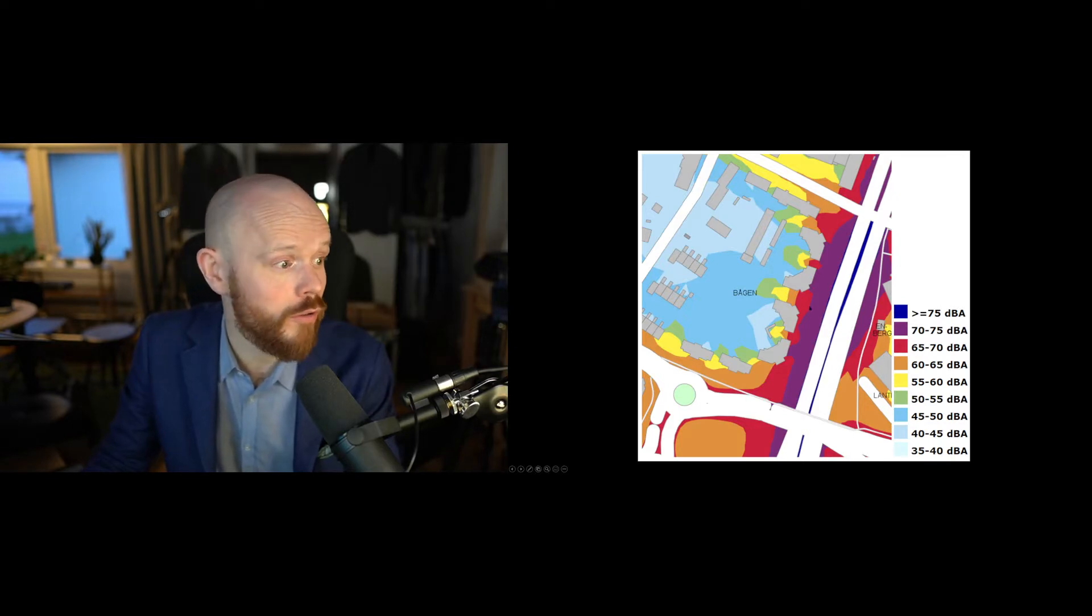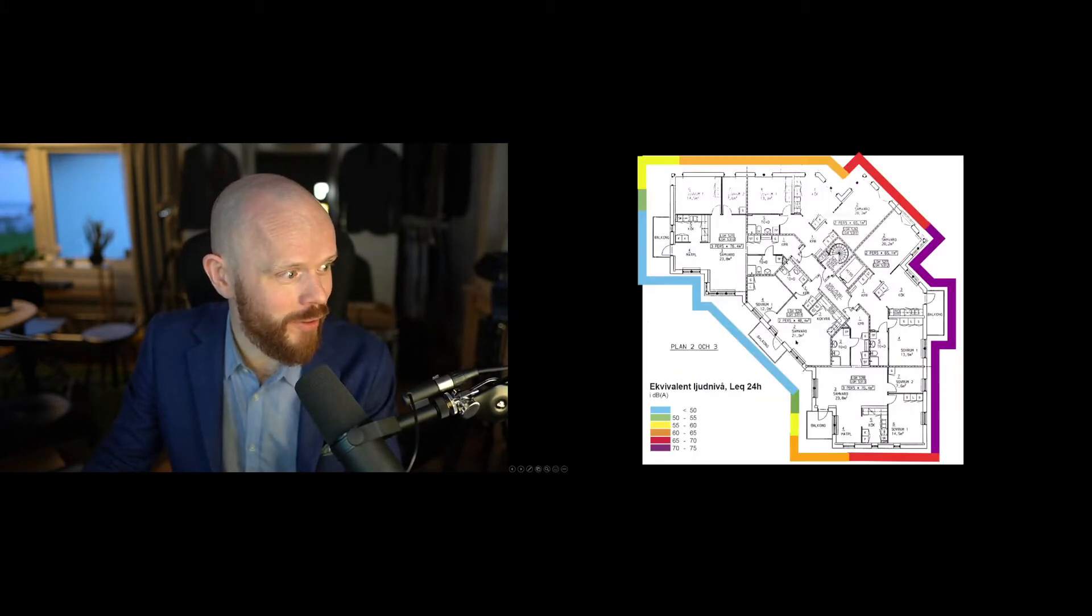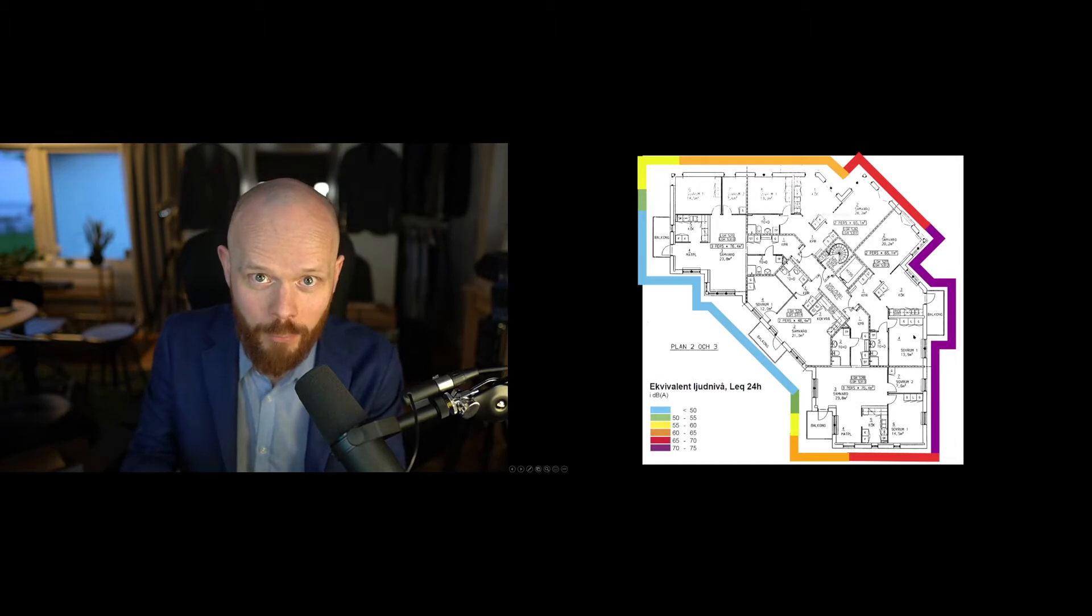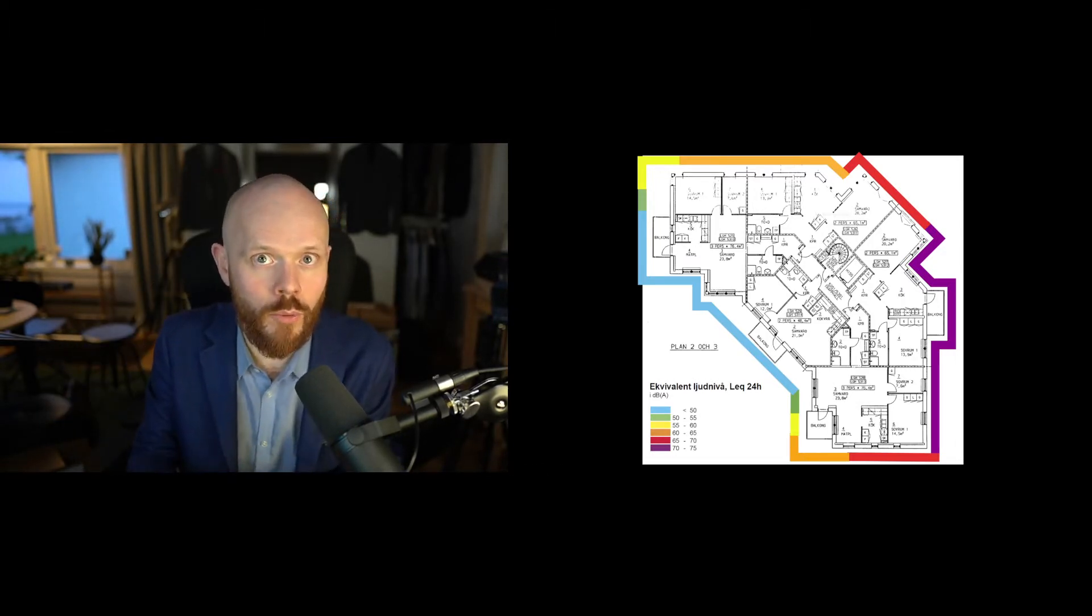So how do we do this then? This is the next step. We go in here, and as you see, it's story level two and three. You can get these noise maps now on different heights above ground level, so you can map the house in 3D.